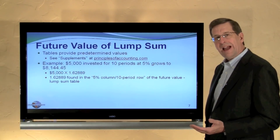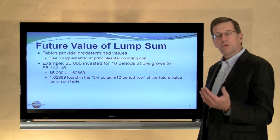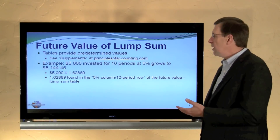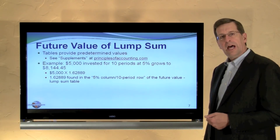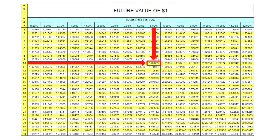There are tables that have calculated these values for us, called future value tables. They're useful in calculations such as the following: if $5,000 is invested for 10 periods at 5%, it'll grow to $8,144.45. That's calculated as $5,000 times 1.62889, which is found in the future value of a lump sum table in the 5% column, 10-period row. These tables are included on the website and in the appendix to your managerial accounting textbook.